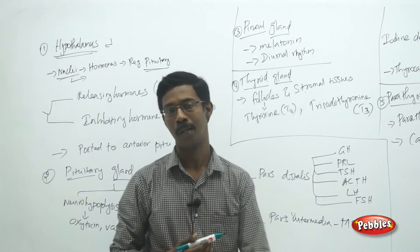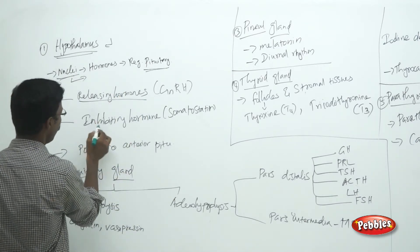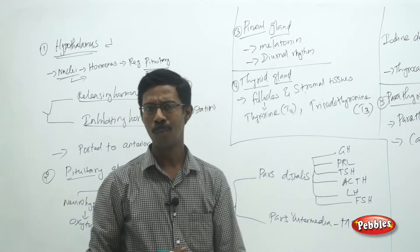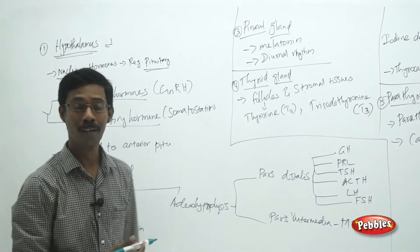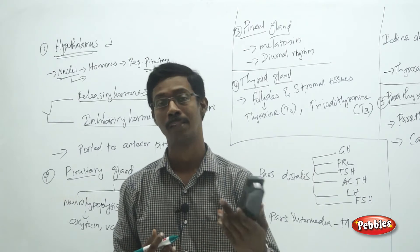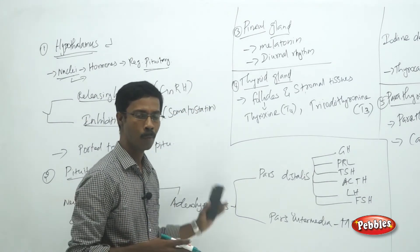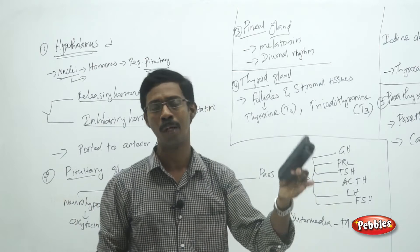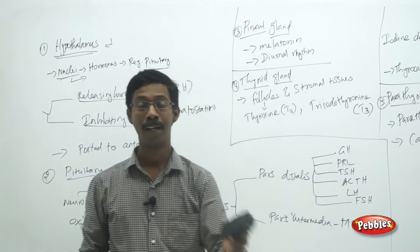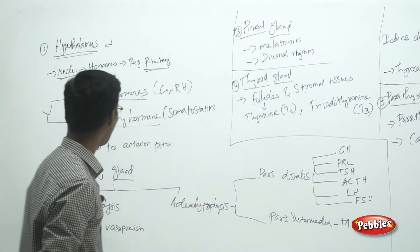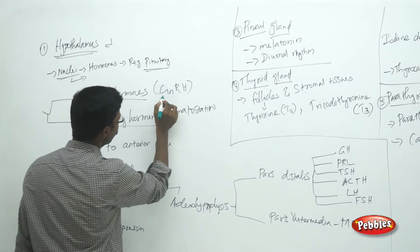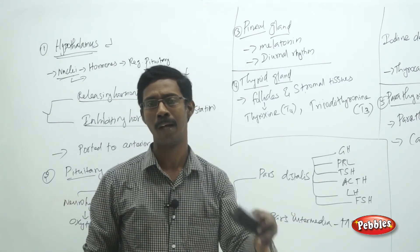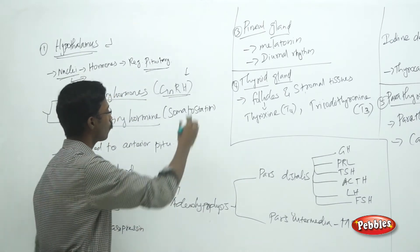The hormones directly secreted by the hypothalamus are divided into two categories: releasing hormones and inhibiting hormones. Releasing hormones stimulate the pituitary to secrete certain hormones. For example, gonadotrophin-releasing hormone (GnRH) is produced by the hypothalamus and induces the pituitary to secrete gonadotrophins.